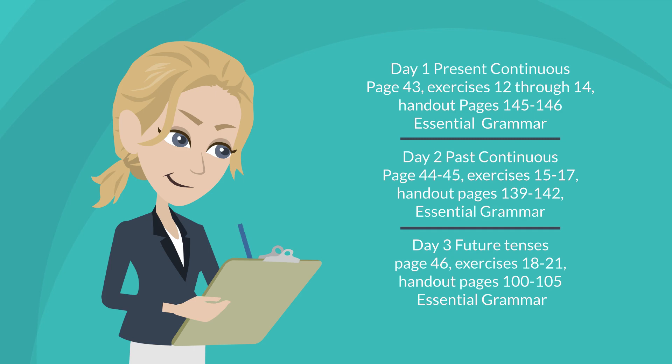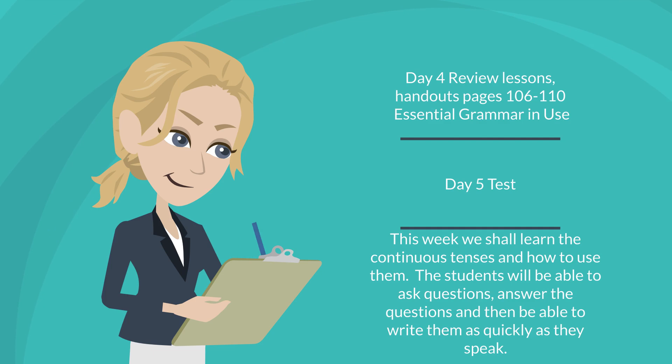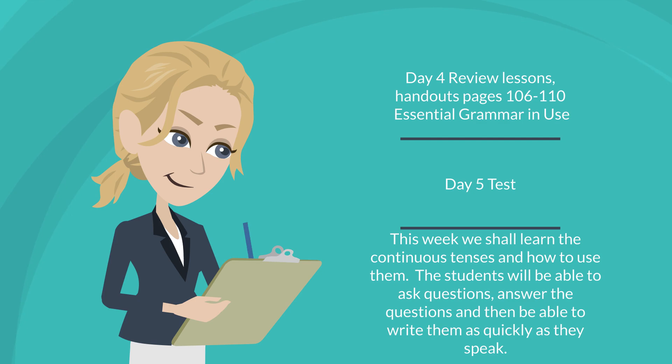Day one: present continuous, page 43, exercises 12 through 14, handout pages 145 to 146, Essential Grammar. Day two: past continuous, pages 44 to 45, exercises 15 to 17, handout pages 139 to 142, Essential Grammar. Day three: future tenses, page 46, exercises 18 to 21, handout pages 100 to 105, Essential Grammar. Day four: review lessons, handouts pages 106 to 110, Essential Grammar in Use.